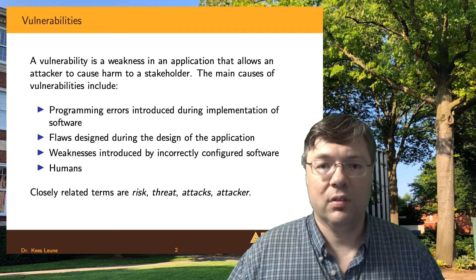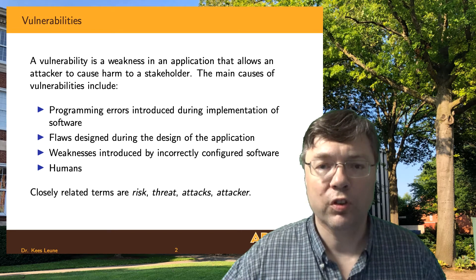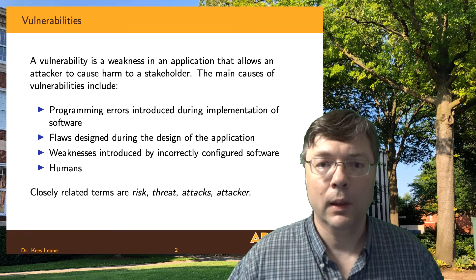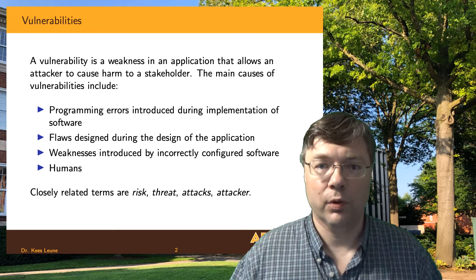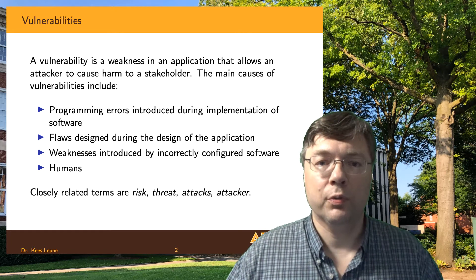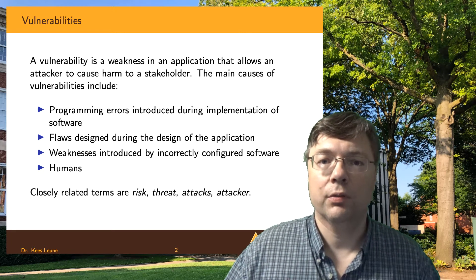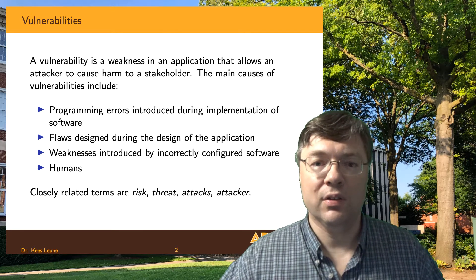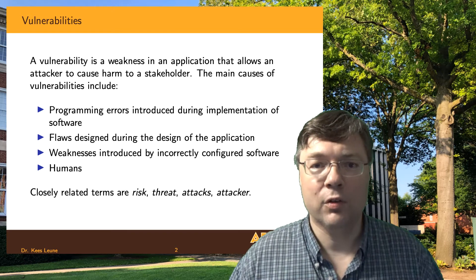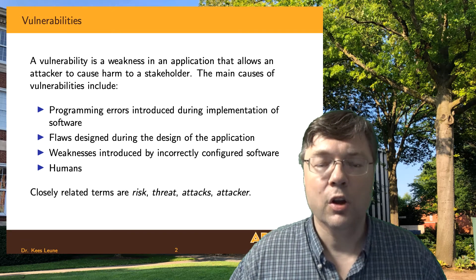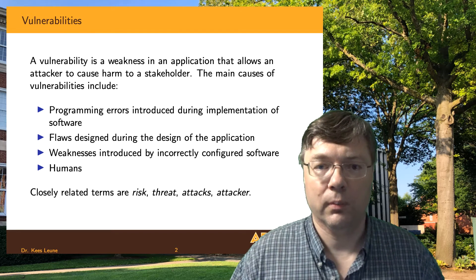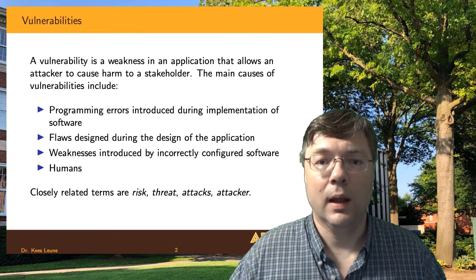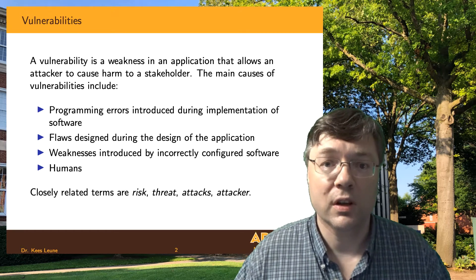Even if the system is designed completely correctly and the software is implemented completely correctly, there is still a third possibility of things that can go wrong. Most software today, especially enterprise software, needs to be configured before we can use it. If that configuration is incorrect, it doesn't matter how secure your software or architecture is — you're still vulnerable to exploitation. Configuration mistakes are even easier to fix than implementation mistakes, but they still need to be fixed.